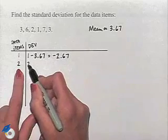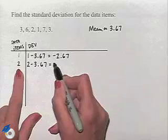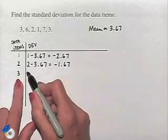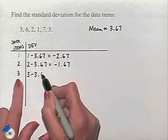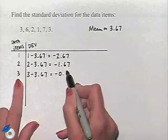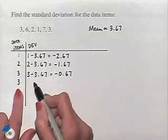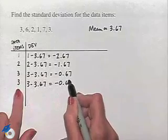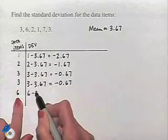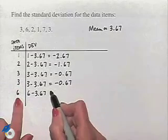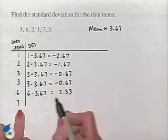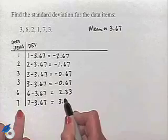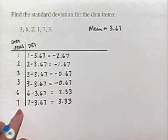Continuing the deviations: 2 minus 3.67 equals negative 1.67; 3 minus 3.67 equals negative 0.67; another 3 minus 3.67 equals negative 0.67; 6 minus 3.67 equals 2.33; and 7 minus 3.67 equals 3.33.